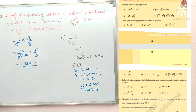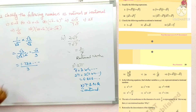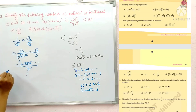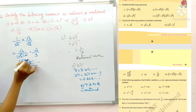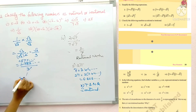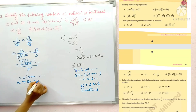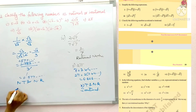After rationalizing, we divide 1.732 by 3. The result is 0.577 and so on — non-terminating and non-recurring. So 1 by root 3 is an irrational number.